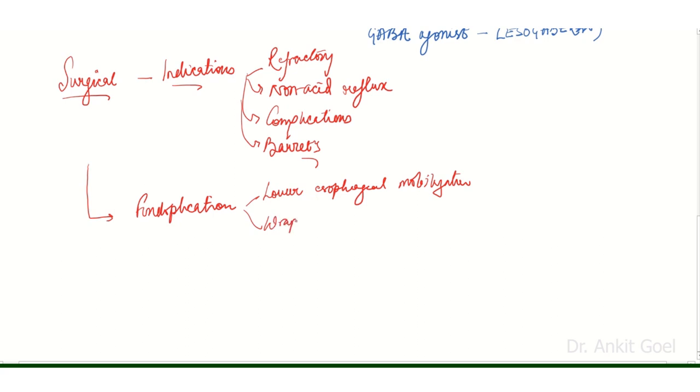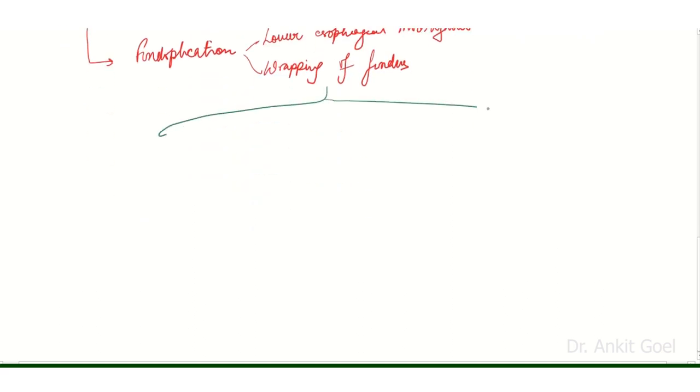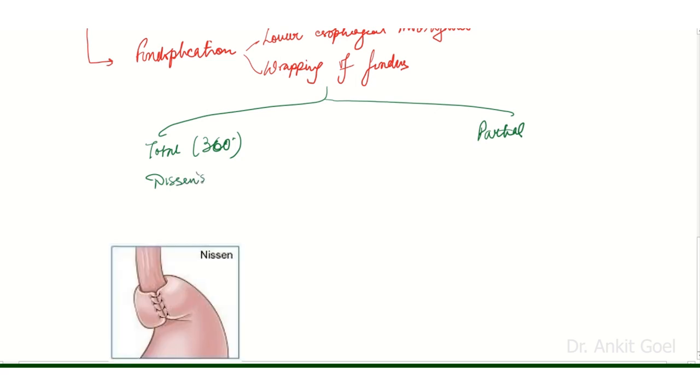It requires mobilization of the lower esophagus and wrapping of the fundus of the stomach around the esophagus, either partially or totally. Depending on the amount of wrapping, this can be a total fundoplication or a partial fundoplication. The total fundoplication is known as the Nissen fundoplication. As we can see in this image, there is 360-degree wrapping of the fundus around the lower esophagus. The problem with this is it can lead to gas bloat syndrome, and therefore there are modifications in the form of partial fundoplication.